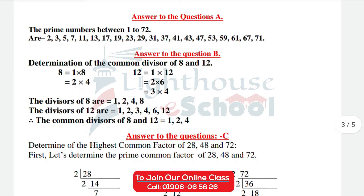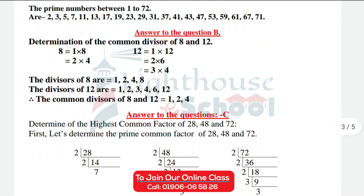The prime numbers between 1 and 72 are: 2, 3, 5, 7, 11, 13, 17, 19, 23, 29, 31, 37, 41, 43, 47, 53, 59, 61, 67, 71. These are the prime numbers.